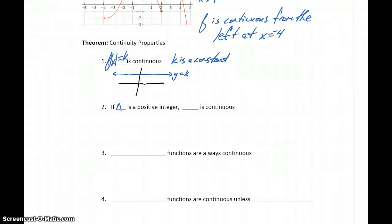If N is some positive integer, then we can say that X to the nth power is continuous. So X squared, X cubed, X to the fourth power, any of those functions will always be continuous. If we look at something like X squared, no holes or breaks. X cubed, no holes or breaks. Each of those functions are always going to be smooth and continuous.